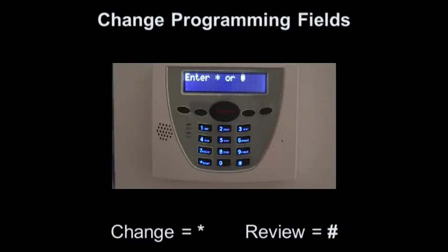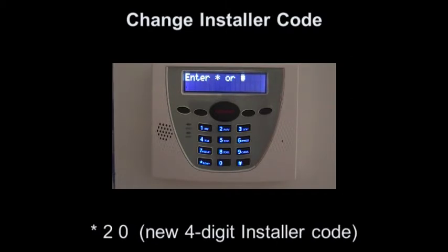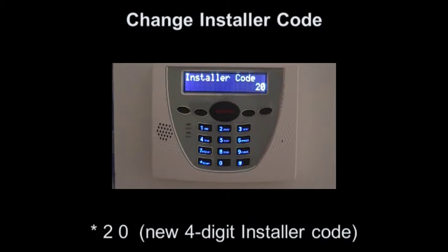To enter information, we press star and the address number. To review information, we press crosshatch and the address number. To change the installer code, we enter star 20 and enter the four-digit installer code required.